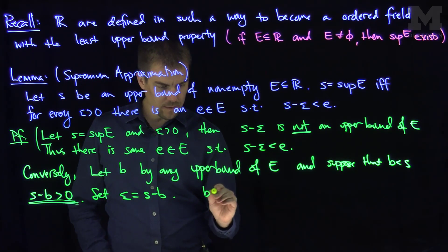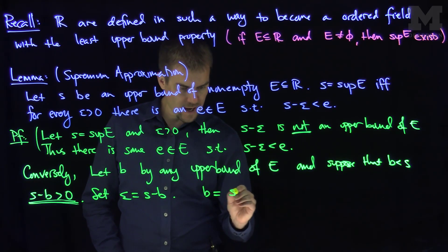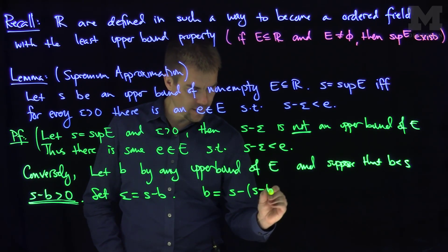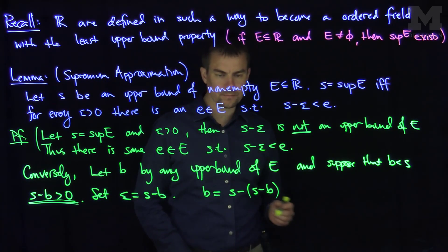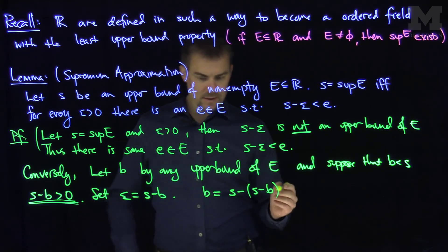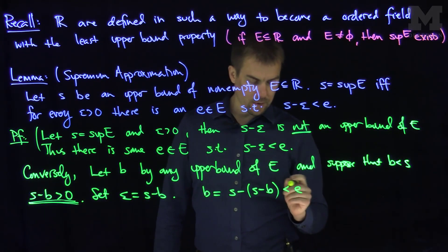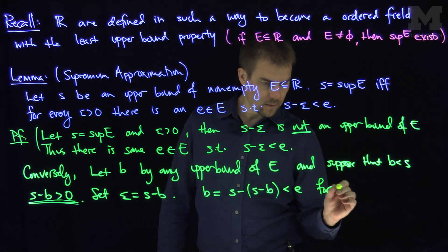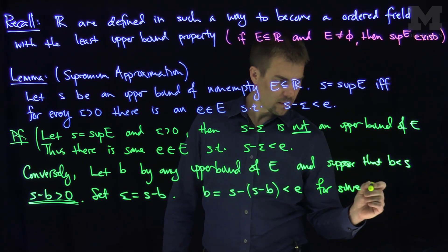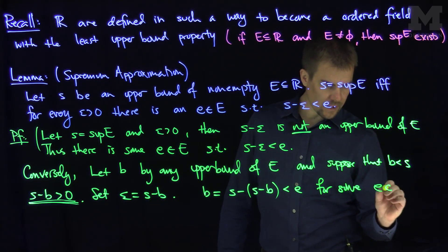Then we know that B is the same as S minus S minus B, just by algebra, and this is less than e by my conclusion here for some e in E.